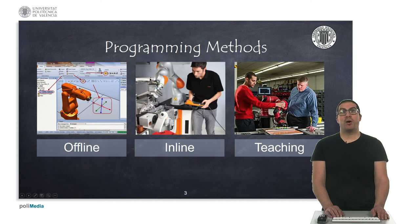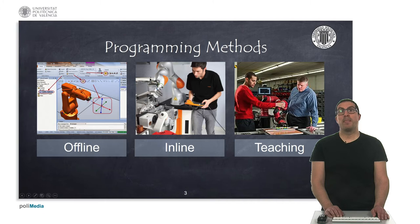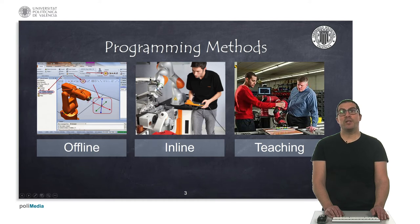So at the end of all this process, the robot will have a code that will be able to reproduce as many times as required. Collaborative robots provide a third way of programming based on teaching mode. In this case, they use sensors so you can drag the robot arm to the desired position and orientation, and freely move the robot, then use the desired positions to later remember and reproduce them.